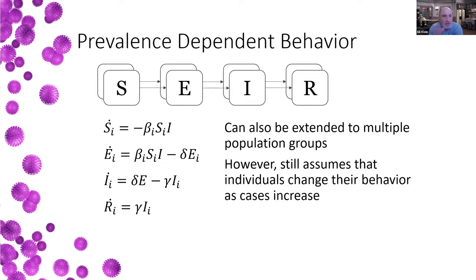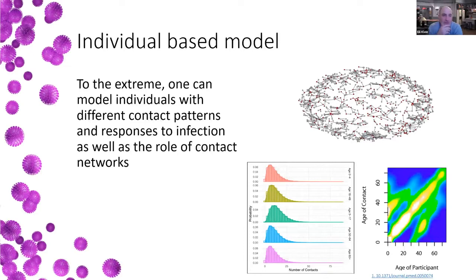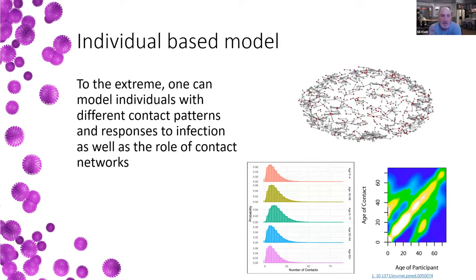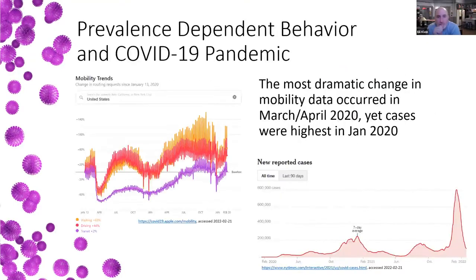There are other ways to do this — you could have different betas for different groups. At the extreme, as you disaggregate groups you can actually go to an individual-based model, which is what we've been running here for the last couple of years. In those models, individuals have different contact patterns and can have different responses to infection rates, as well as the role of contact networks. Closing schools and the impact on child behavior can be modeled directly, though it adds stochasticity that makes it difficult to determine which outcomes are most important.